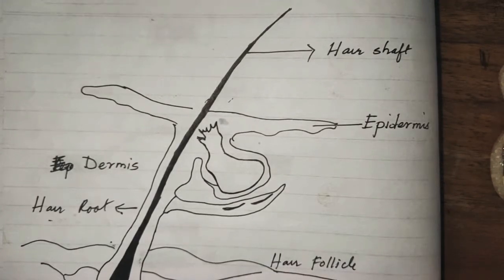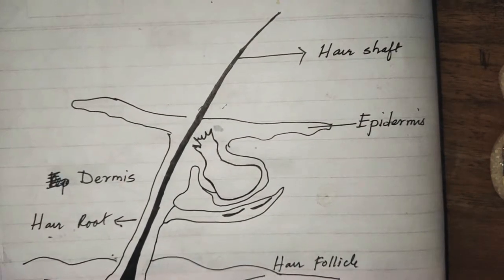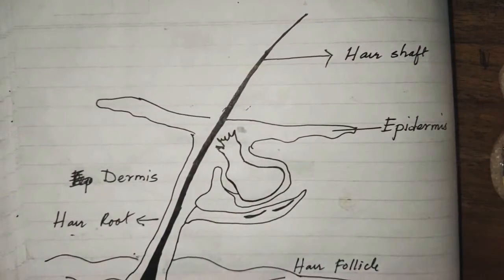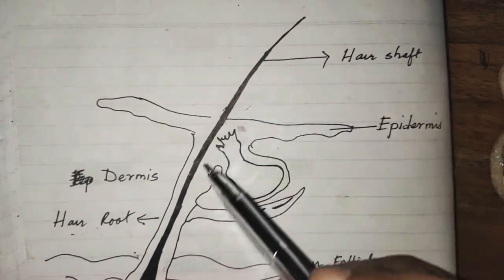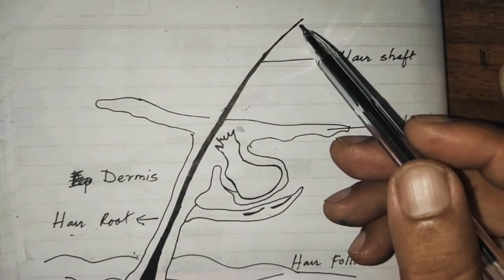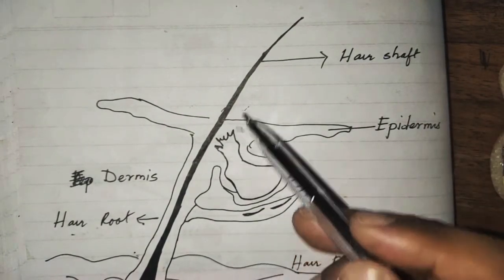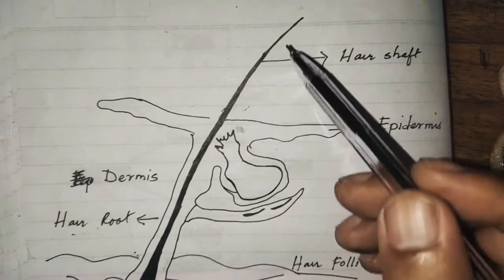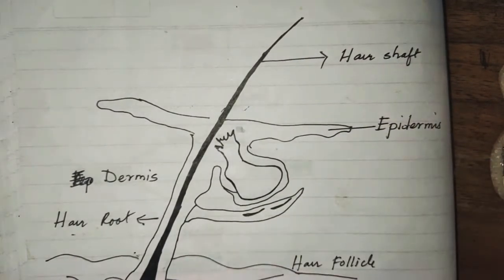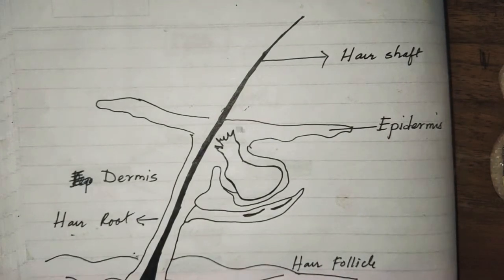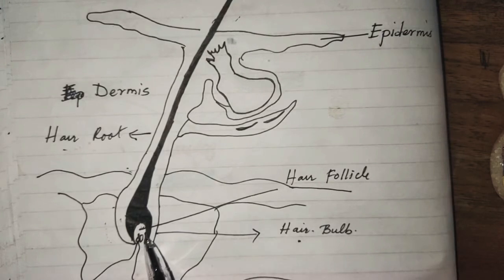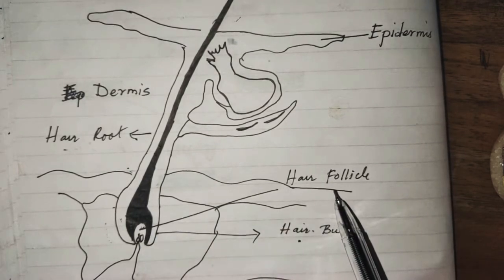Good morning class. Today we will be learning about skin derivatives and their functions. We will start with hair, which is a specialized elongated thread-like cylindrical outgrowth of the skin epidermis. It lies within a pit in the skin called the hair follicle.